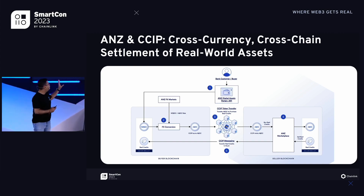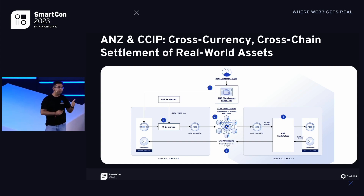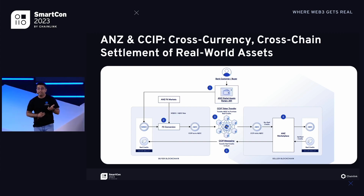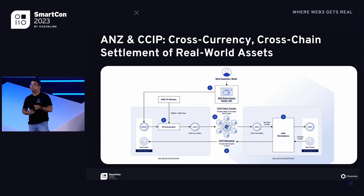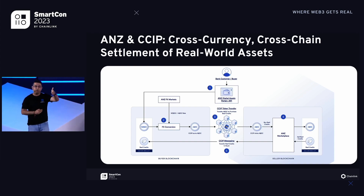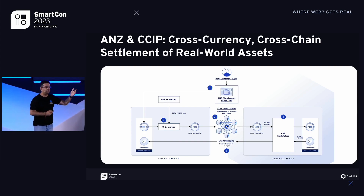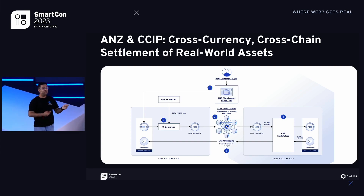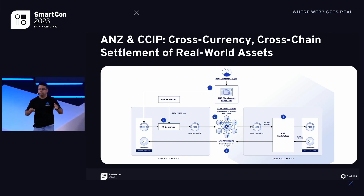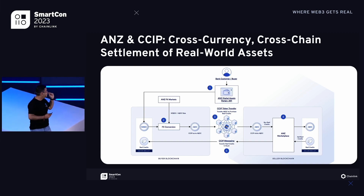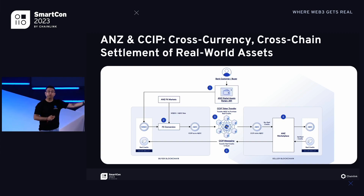What information needs to flow between the two networks to enable this transaction? First: to which network am I going to buy the asset — what is the chain ID? Second: what is the contract address of that particular marketplace contract, so I can point to it and call the function — without that, you can't execute. Third: the details related to that specific order — I want to purchase a hundred Reef credits and pay X dollars per Reef credit. That's all the information which has to flow from network one to network two.